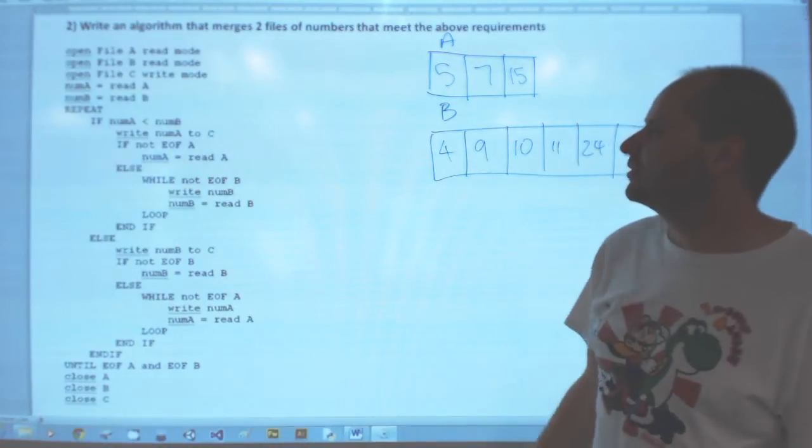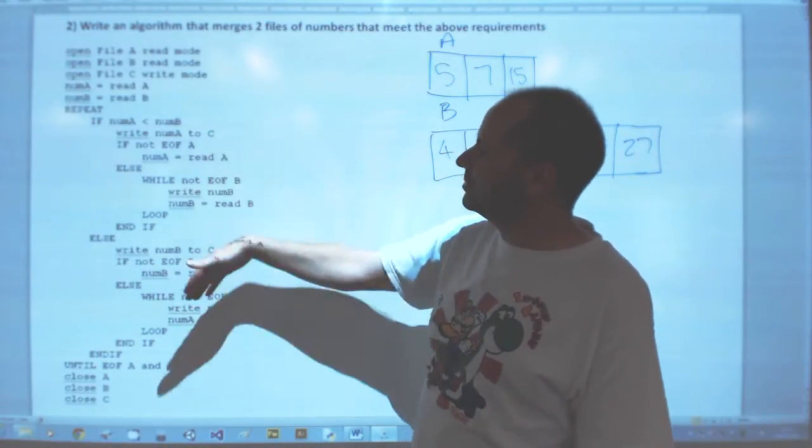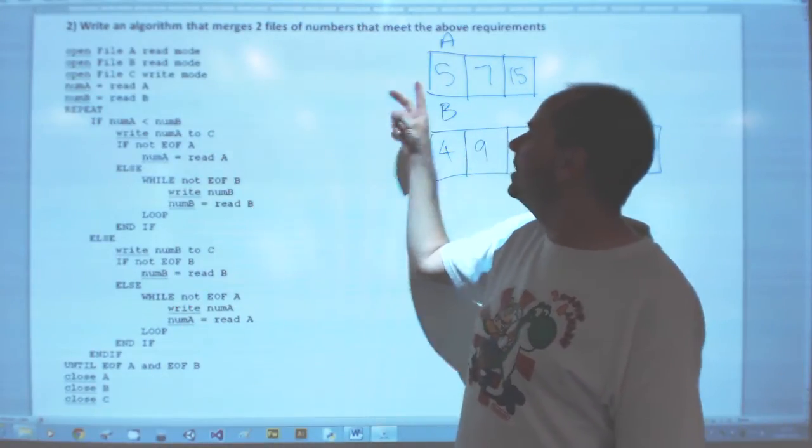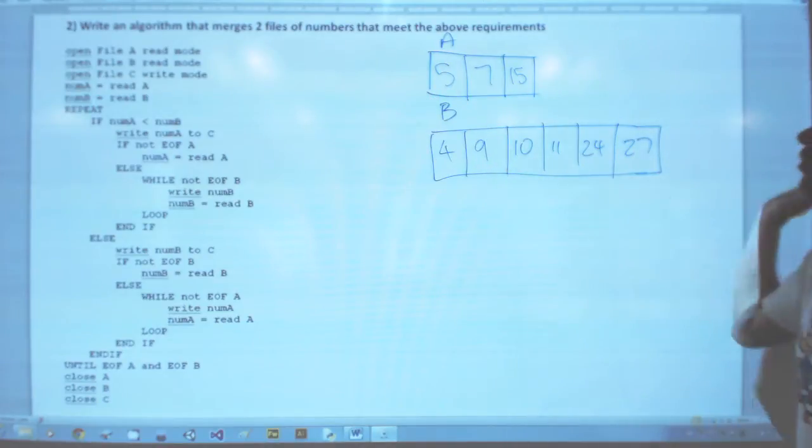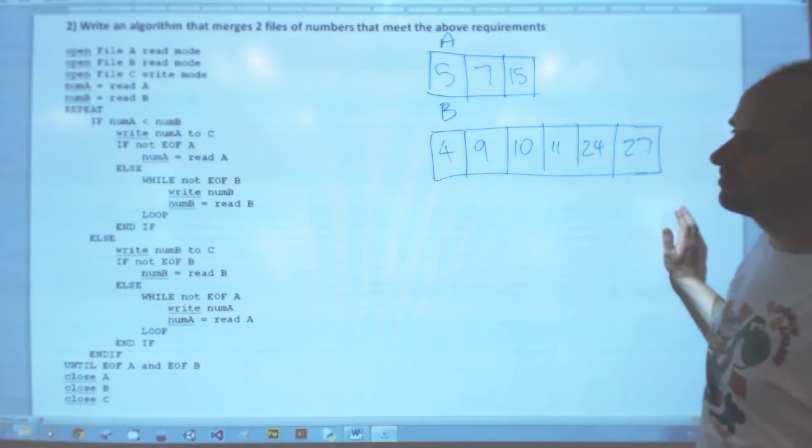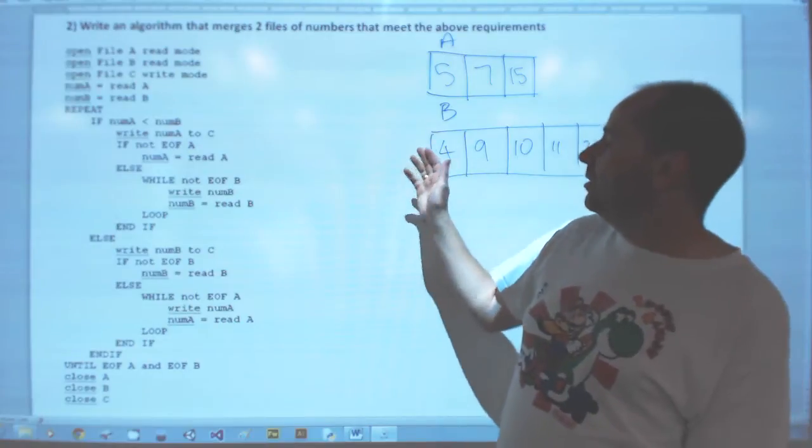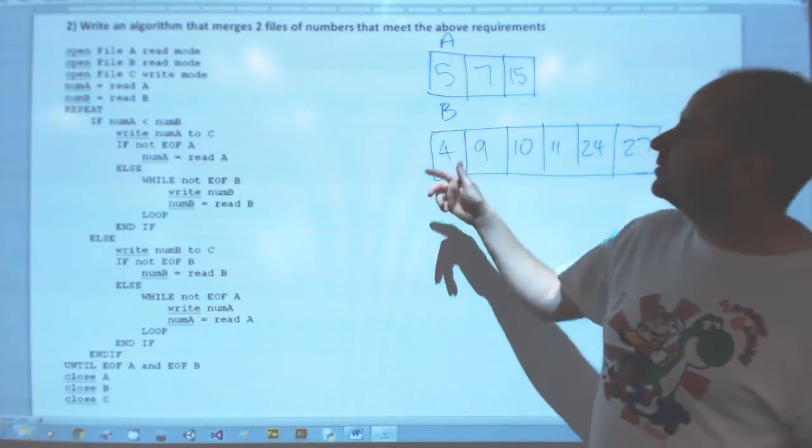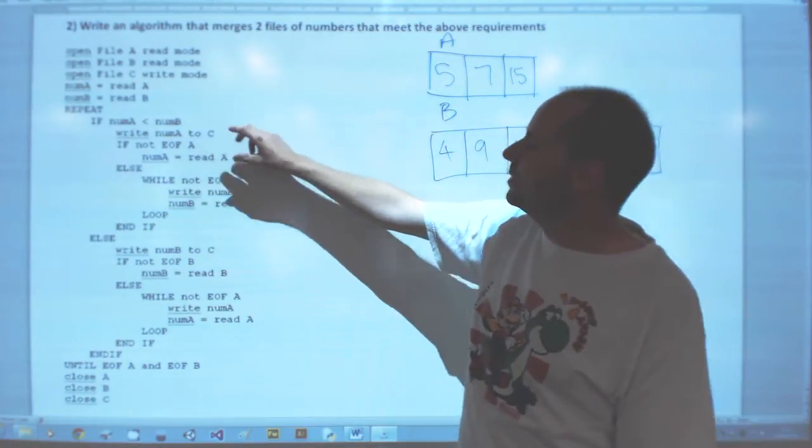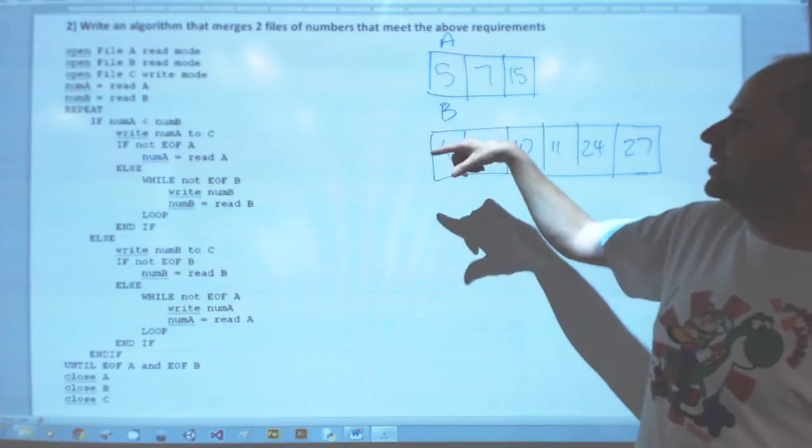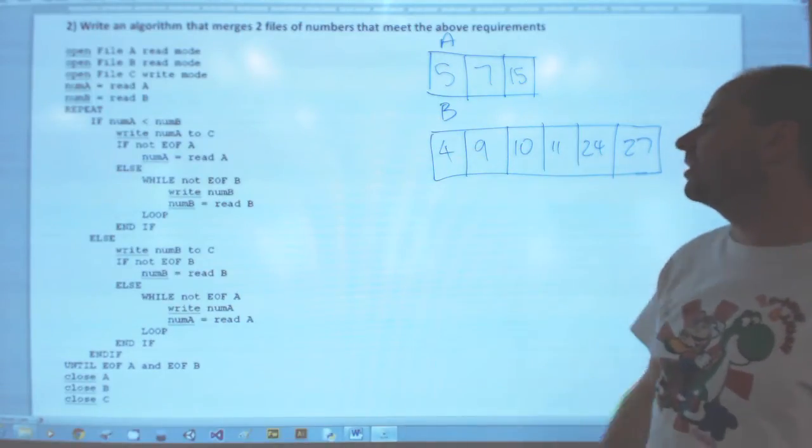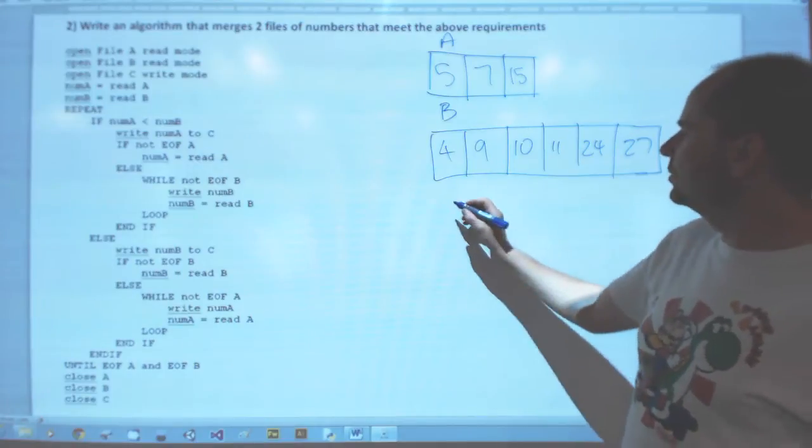We just have some files to merge, otherwise no point doing it. The basic structure is we just keep reading in from these two files until we've written all of the data out to the new one. And because we want to maintain order for each pair of numbers from each file that we're reading, we say which is the smallest and we'll write that one out.